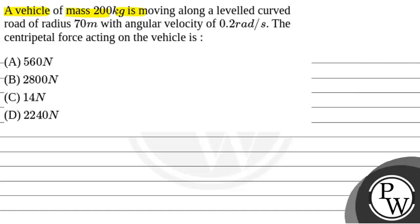a vehicle of mass 200 kg is moving along a leveled curved road of radius 70 meter with angular velocity of 0.2 radian per second. The centripetal force acting on the vehicle is 560 N, 2800 N, 14 N and 2240 N.